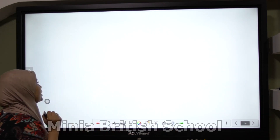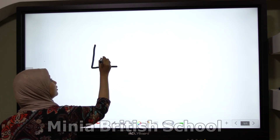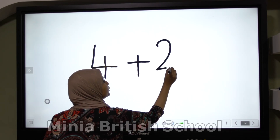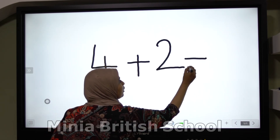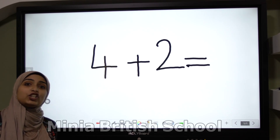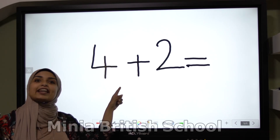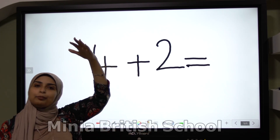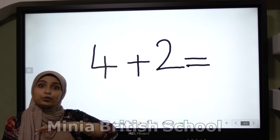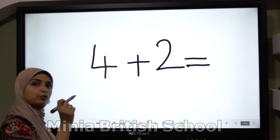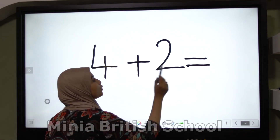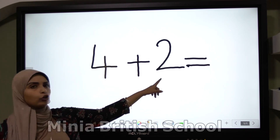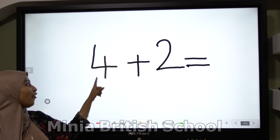Let's see another equation. Four plus two equal. Can you tell me, Keiji, what is the sign? Plus. Excellent! Plus means add something together. Excellent, Keiji. All of you, read with me: four plus two equal. So who can tell me where is the big number? Four or two? Four. Excellent, Keiji.